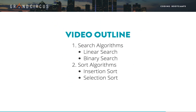We'll be looking at four algorithms. The first two are for searching an array: linear search and binary search. The last two are for sorting an array: insertion sort and selection sort. These two are alternatives to the merge sort that we saw in the last video.